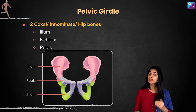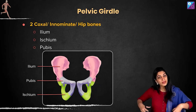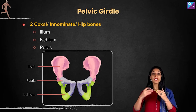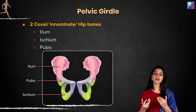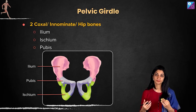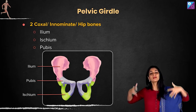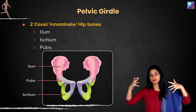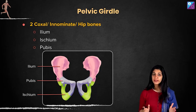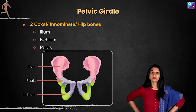Apart from that, children, the pelvic region — the lower region of the body — is also carrying the extra weight of the upper body. It is supporting the trunk. Now, the pelvic girdle — you can essentially feel it.